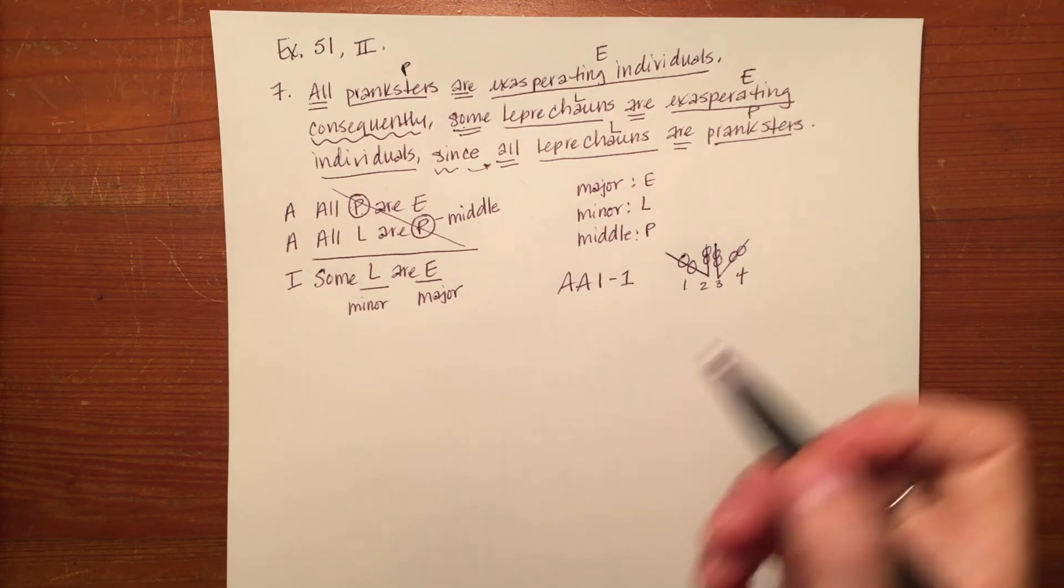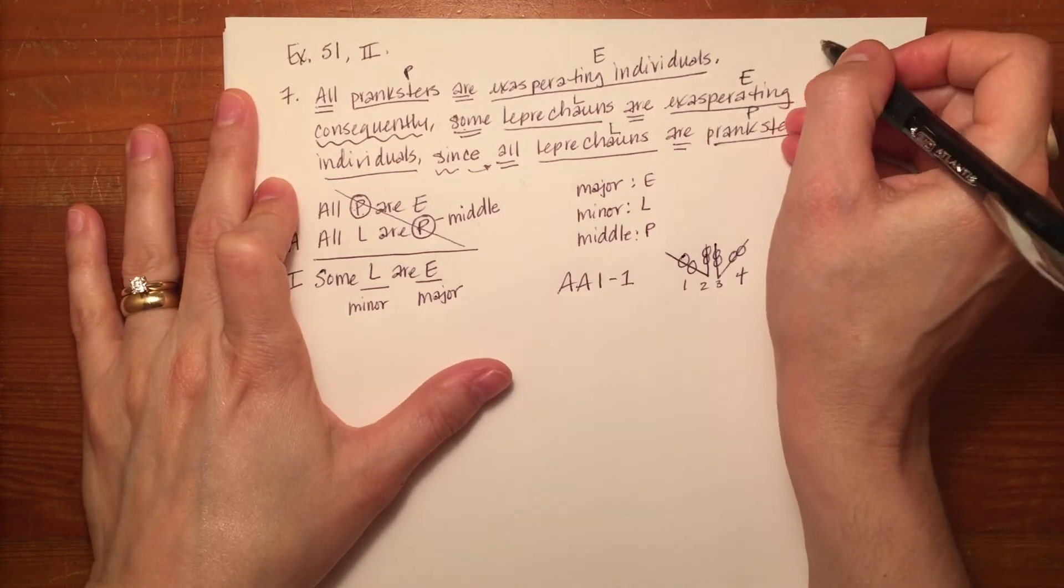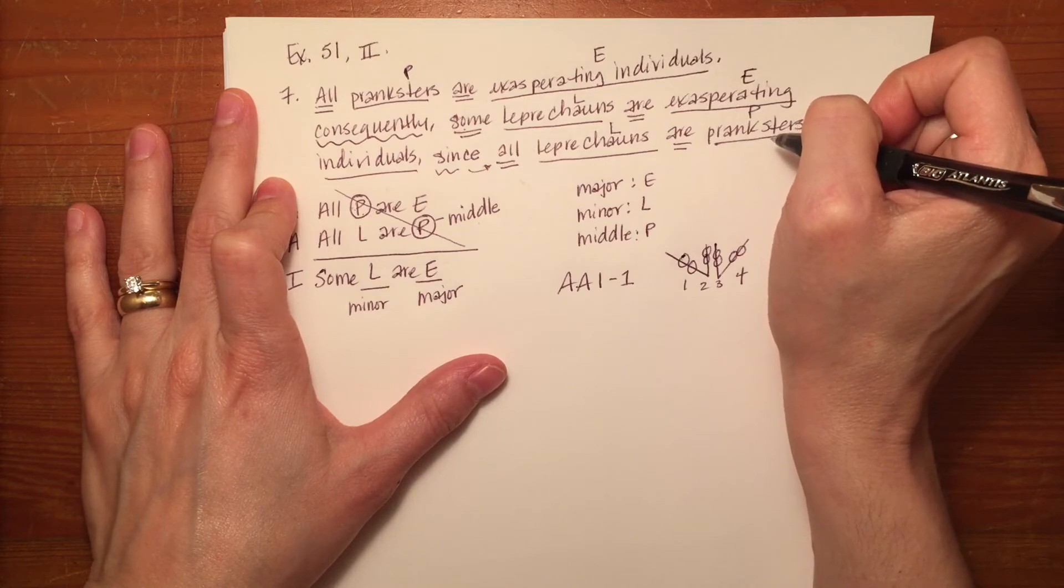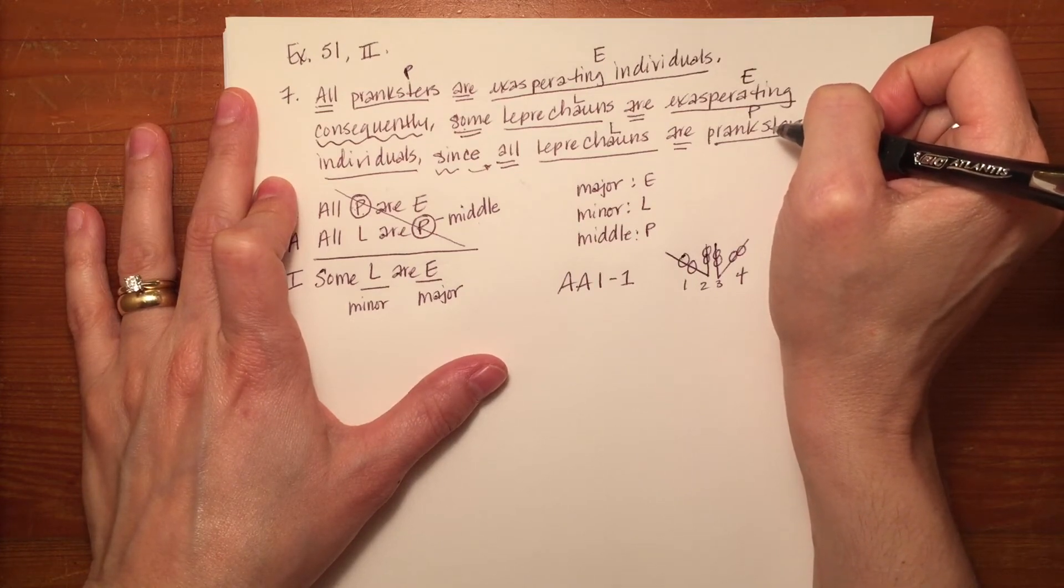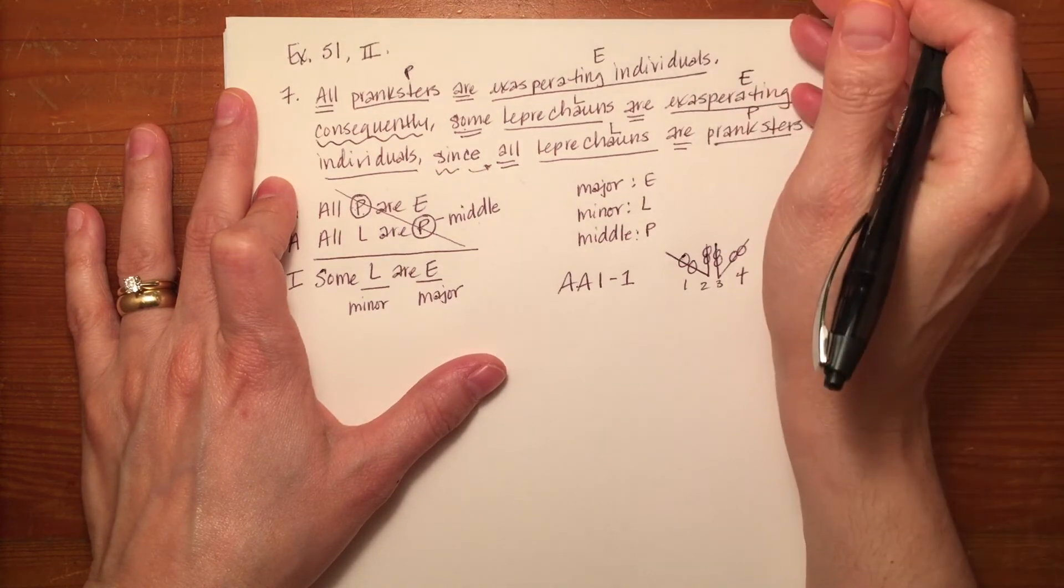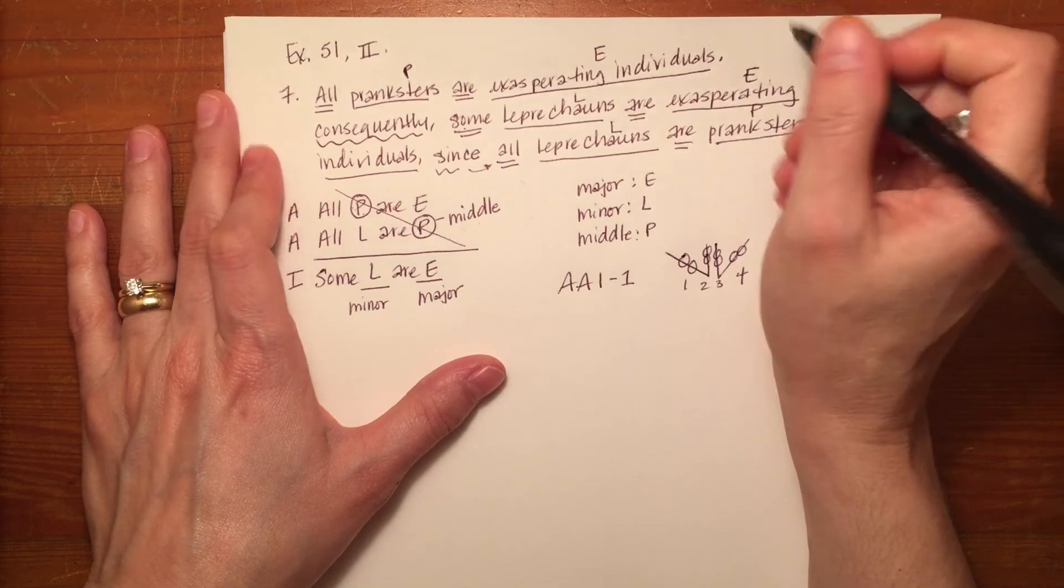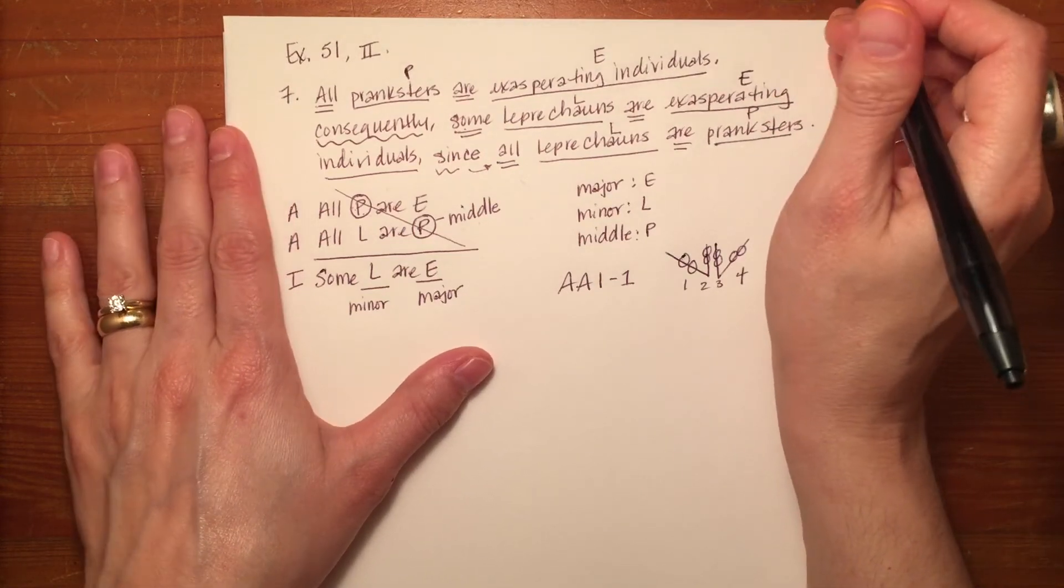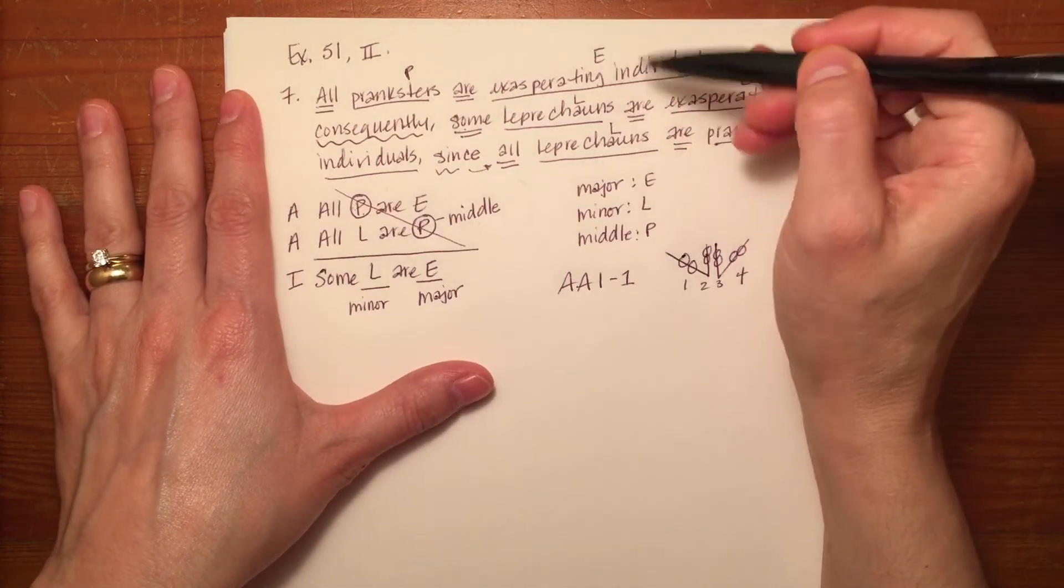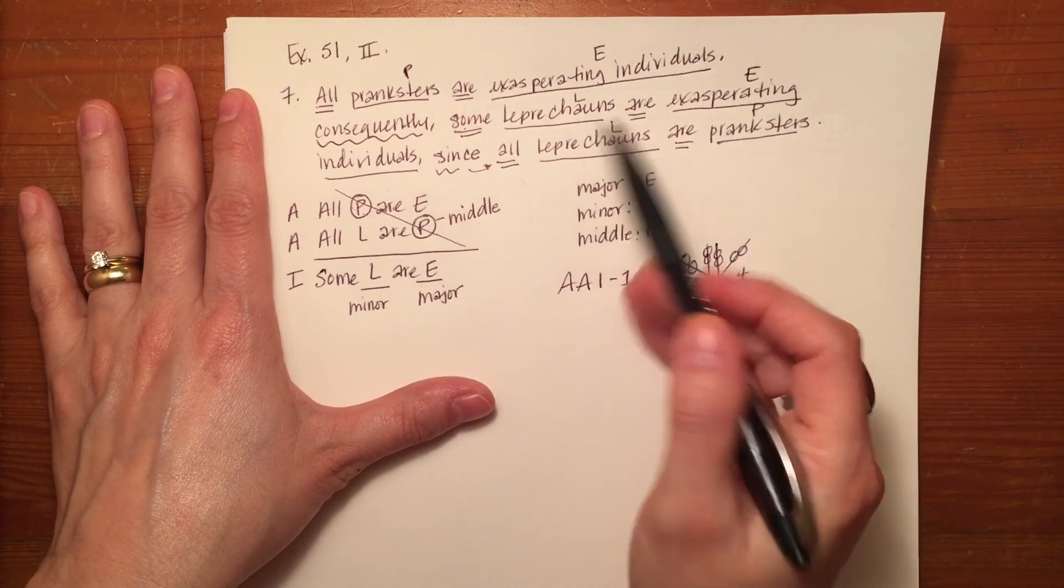So what we're looking for is whether or not the term has empty extension. You will remember when we talked about current king of England being a term that has empty extension. So you can name the attributes or list the attributes and qualities of a current king of England, but you can't list actual current kings of England because they don't exist. For our purposes here, leprechauns do not exist in the world of logic. So we have to see that minor term stood for L, which is leprechauns.